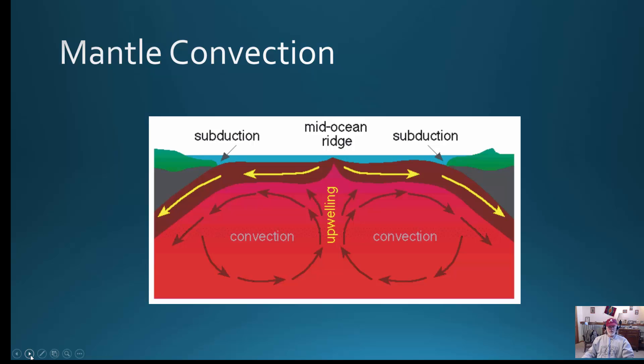What causes the whole idea of plate tectonics is convection currents in the mantle. The deeper you get into the Earth's interior, the warmer it is, and that warmer material has greater energy. As it rises, it cools, and as it cools, the density becomes greater and it sinks back into the mantle — giving us convection currents.